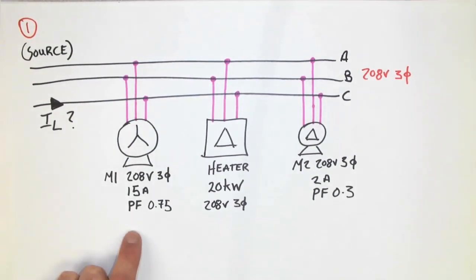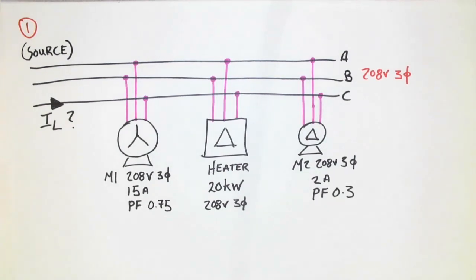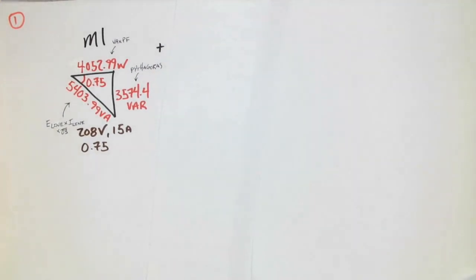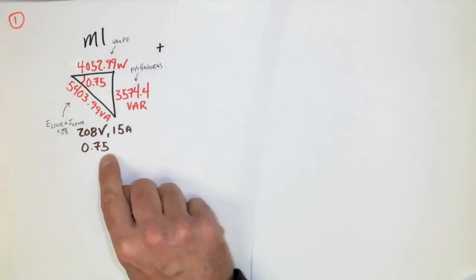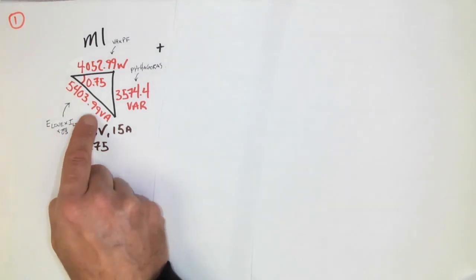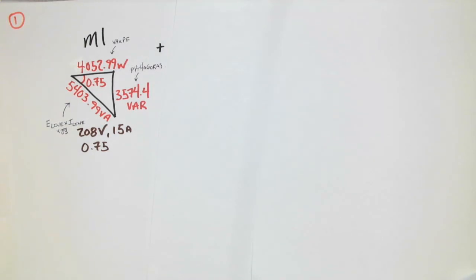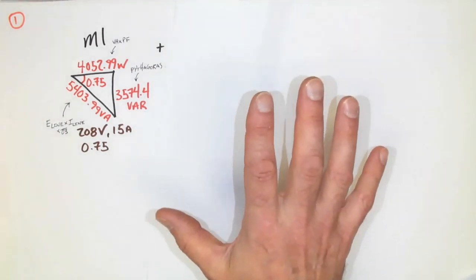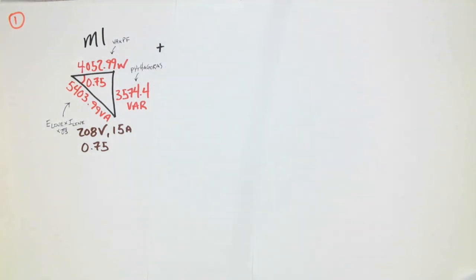So the first step is to sketch a power triangle for each one and calculate all of the different sides of those power triangles. For motor one, I make my first power triangle labeled M1 — 208-volt, 15 amp, 0.75 power factor. Using E-line times I-line times root three, I get the total VA. I multiply by 0.75 to get my power, and then use Pythagoras to get my VAR value of 3574.4. This is not the only way to accomplish this — it's one of many.